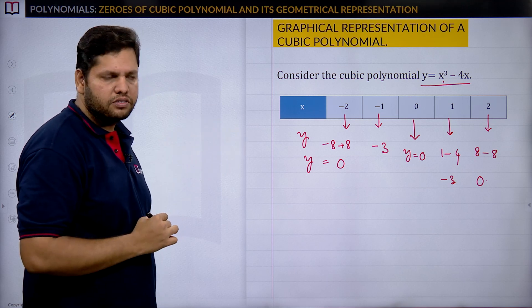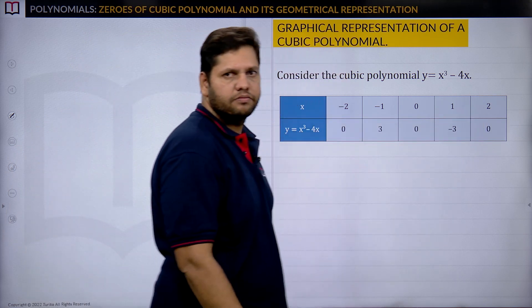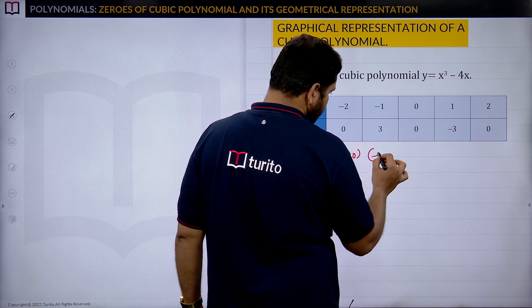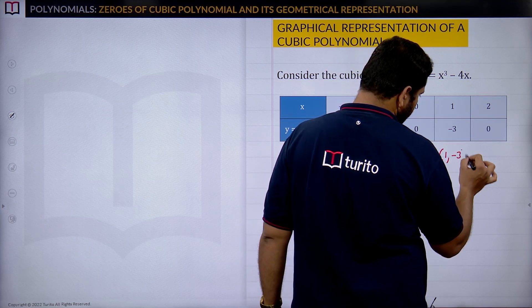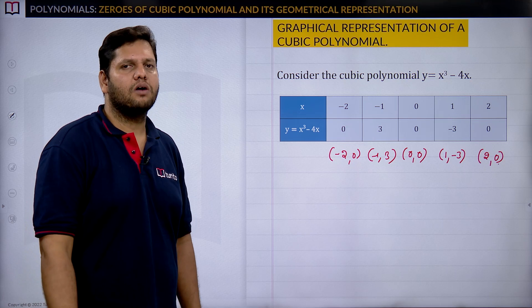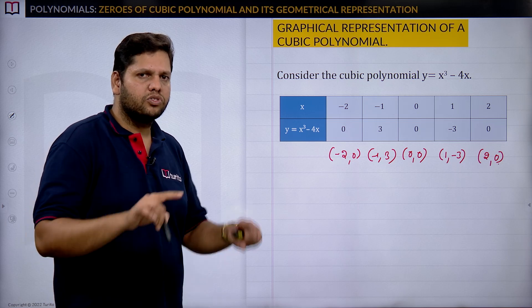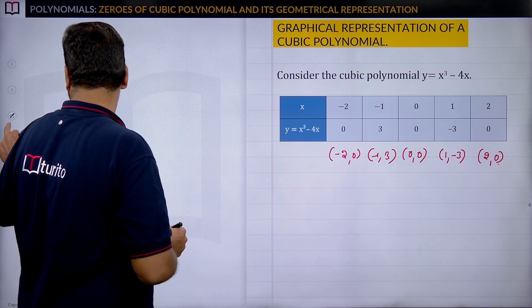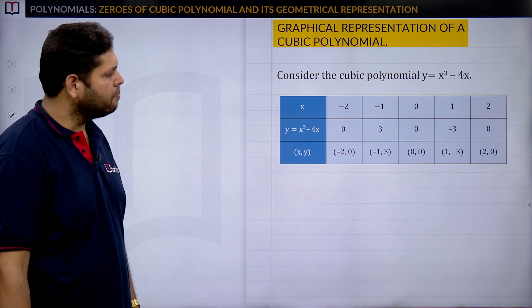The coordinates are: (−2, 0), (−1, −3), (0, 0), (1, −3), and (2, 0). These are the x and y coordinates of our points. Now take the graph, plot all the points, and join them with a free hand.